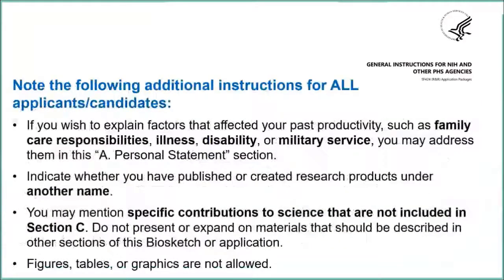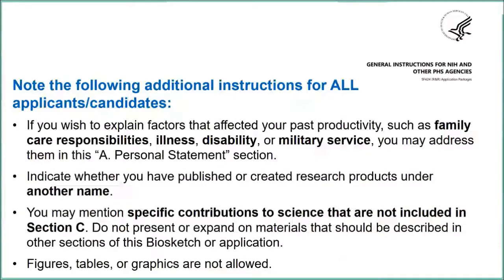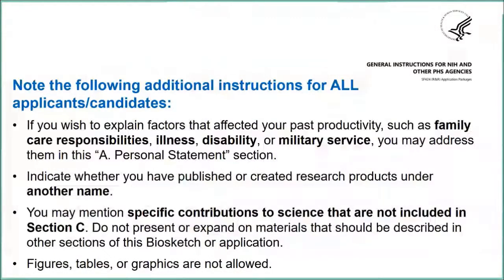These additional pieces of information are for everyone. If you have anything you wish to explain — family care responsibilities, lapses in your training because of illness, disability, military service, anything like that — and this is particularly useful for clinicians who may have had a clinical fellowship that interrupted their research progression — the personal statement is where you discuss it. If you published under a different name, or if you have specific contributions not going to be included in your section C but that support your ability to act in the role you're undertaking for the grant, this is where it goes. You do not repeat section C information in your personal statement, and there are no figures or graphics in this section.